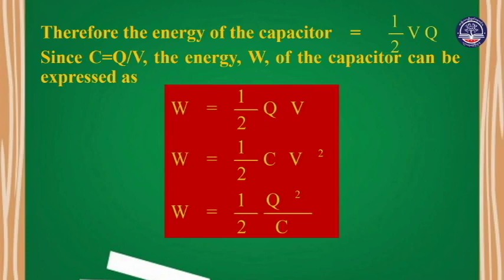Therefore, the energy stored by the capacitor equals one-half times Q times V. Since C equals Q divided by V, the energy W of the capacitor can also be expressed as W equals one-half C V squared, or equivalently W equals Q squared divided by 2C.